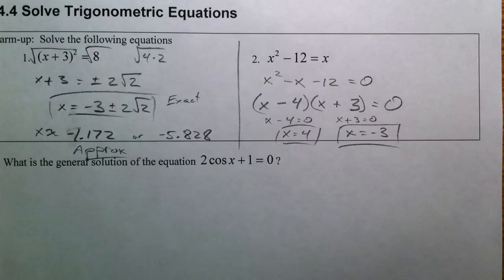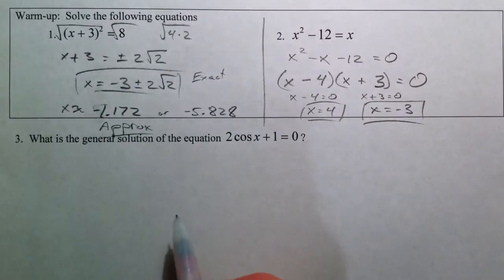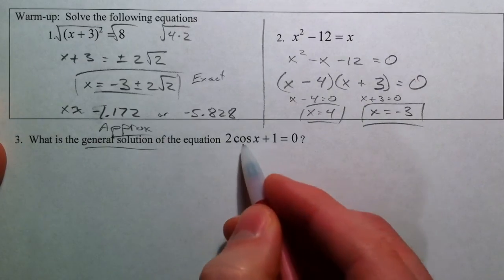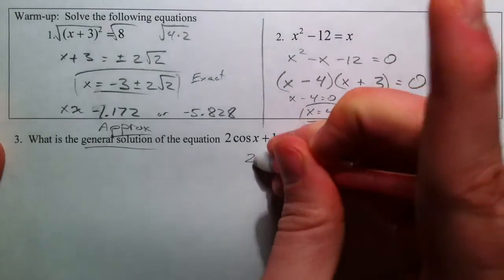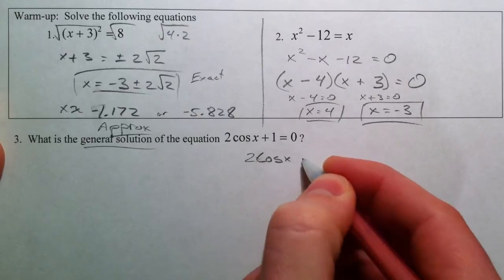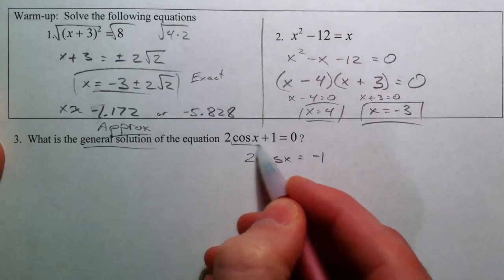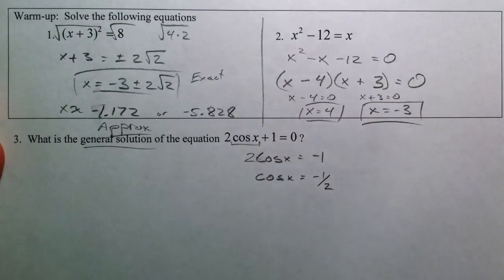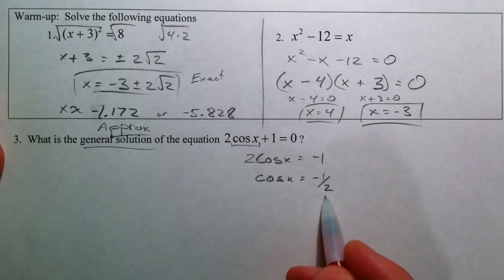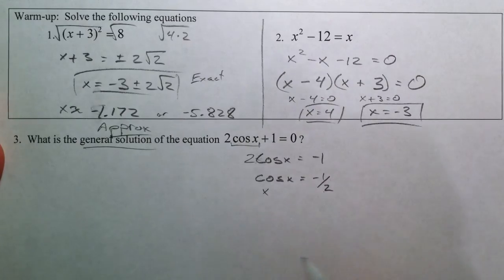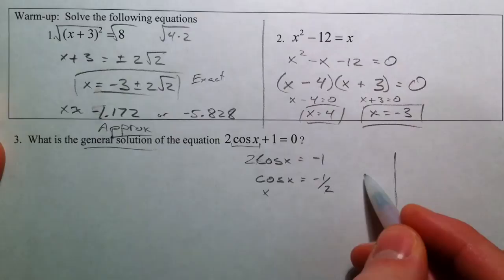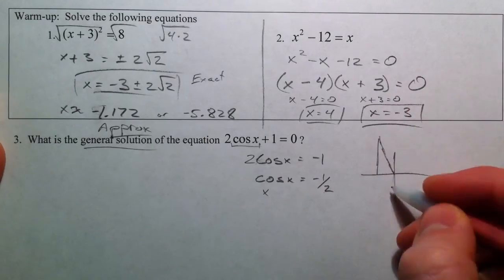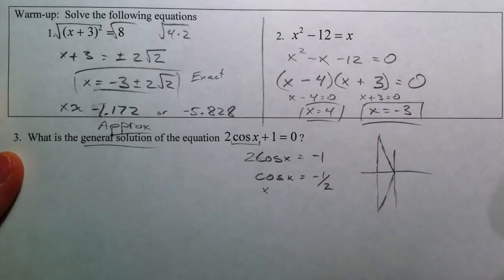So now let's take what we just did and apply it in trig equations. What is the general solution of the equation? I'll get back to what I mean by general solution in one second. But if we try to see this as a whole, take the 1 to the other side — it will be a lot easier. 2 cosine of x equals negative 1. Think of this as: we want to get the cosine of x by itself, because then we can undo the cosine by taking the inverse if we need to. So now we're saying, where does the cosine of x equal negative 1 half? I'm going to do this both in radians and degrees.